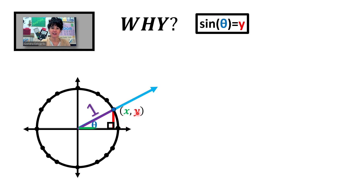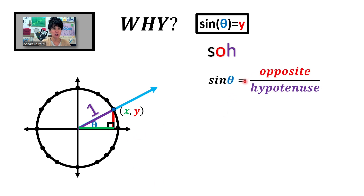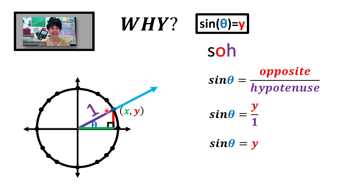The other side lengths: to plot any point you go over x and up y. So the green segment has length x, and the vertical side has length y. Thinking back to right triangle trig, SOHCAHTOA tells us sine of an angle equals opposite over hypotenuse. The side opposite theta is length y, and the hypotenuse is 1. So sine of theta equals y over 1, which means sine of theta equals y.